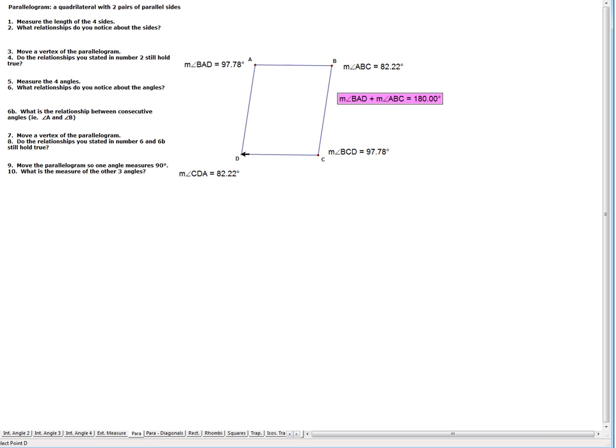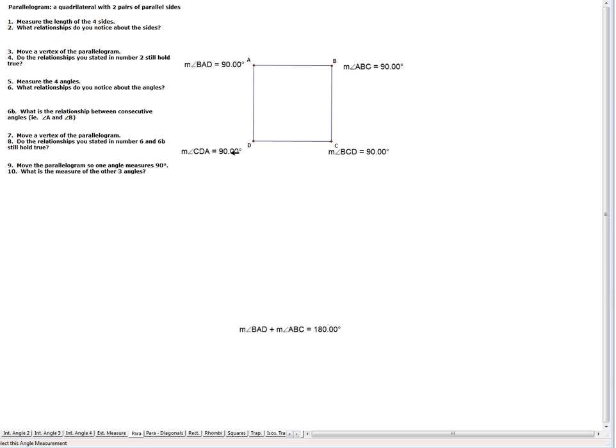Now lastly, it says to move the parallelograms so one angle measures 90 degrees. I now have them all, or excuse me, one angle at 90 degrees. What is the measure of the other three angles? They are also all 90 degrees. This is a characteristic that should be true because remember, opposite angles should be congruent. We have that. Consecutive angles should be equal to 180, which we also have for that. So there are some of our characteristics of a parallelogram.